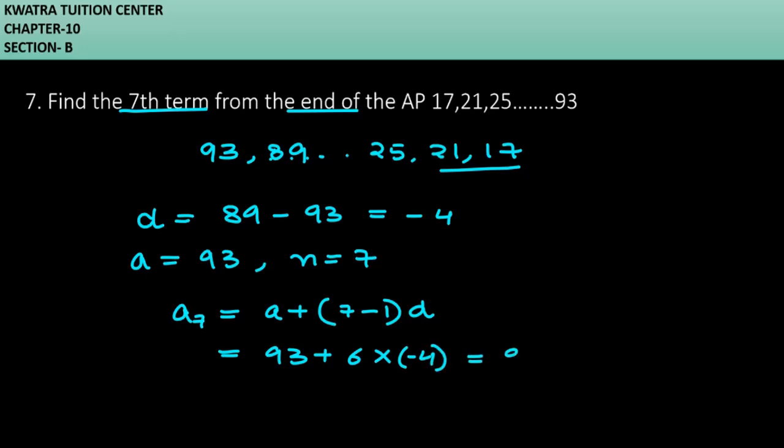So yes, your answer for this one - 13 minus 4 will give you 9, and it will be 69. Yes, your answer to this is 69, meaning the 7th term from the end is 69. Now moving to the next one.